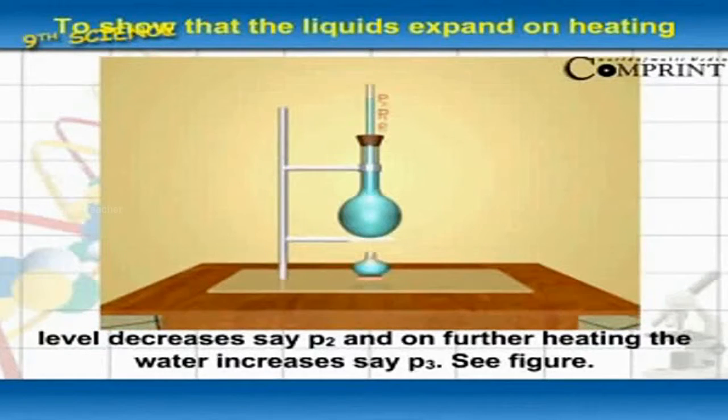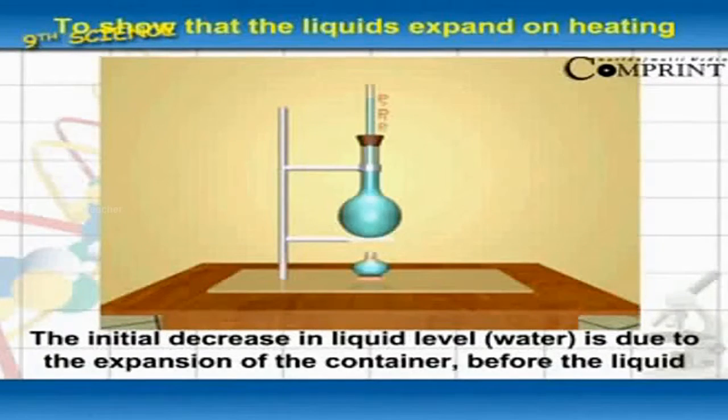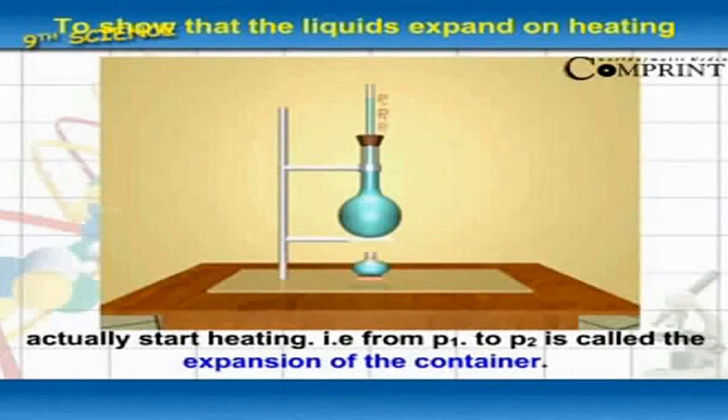Say P3. The initial decrease in liquid level is due to the expansion of the container before the liquid actually starts heating.